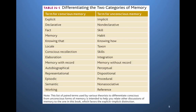Implicit and non-declarative memory has a taxon — meaning it can be organized hierarchically. There are skills and the integration of skills. This is memory without record: you know how to ride a bike, but you don't have any conscious recall of all the individual tiny memory pieces that built up to that skill. It is perceptual in nature, largely aligned with the senses. There can be dispositional differences. It is procedural — stepwise learning in terms of what then what. It is non-associative and reference. This list of paired terms is used by theorists to differentiate conscious from unconscious memory.